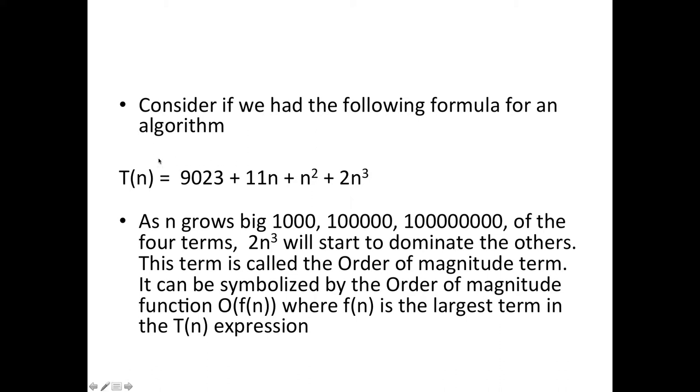Suppose you have a timing expression where the T(n), the number of operations for this algorithm for n is this number: 9023 plus 11n plus n squared plus 2n cubed.